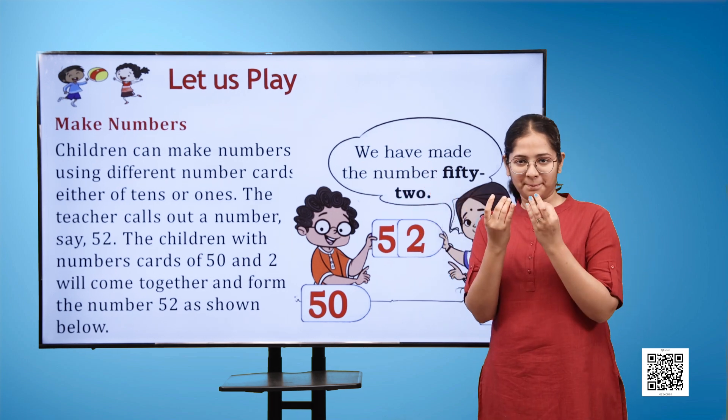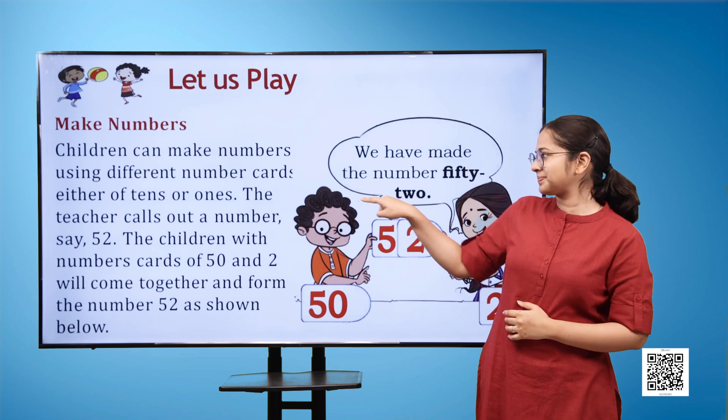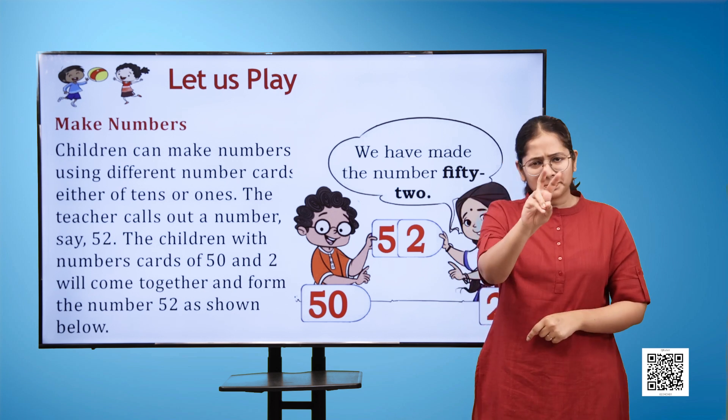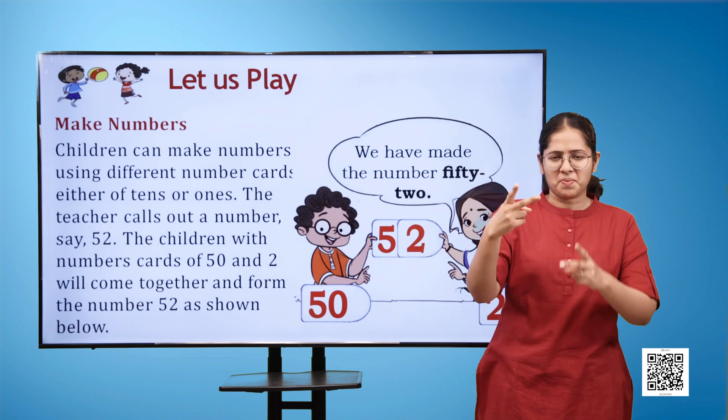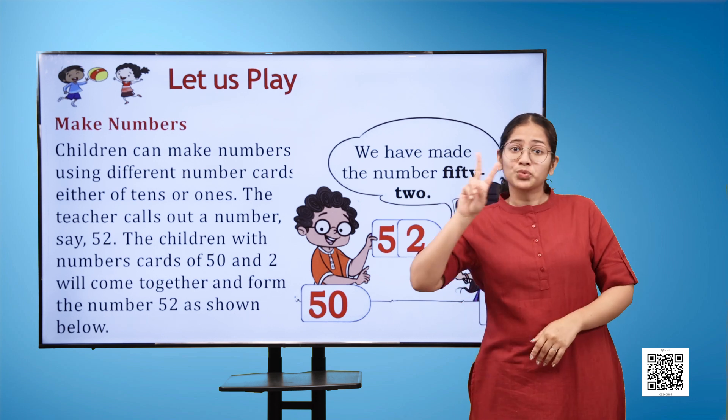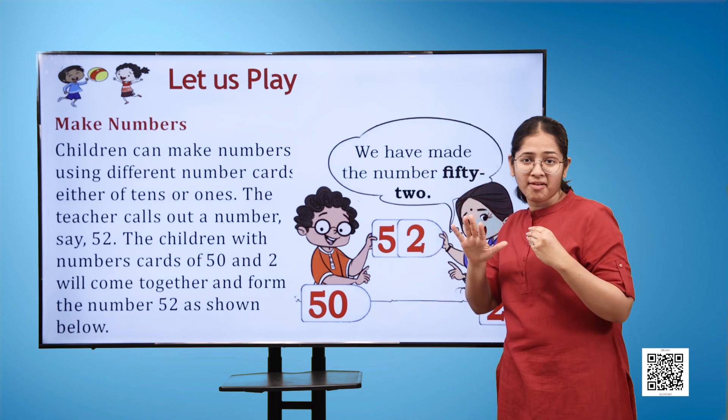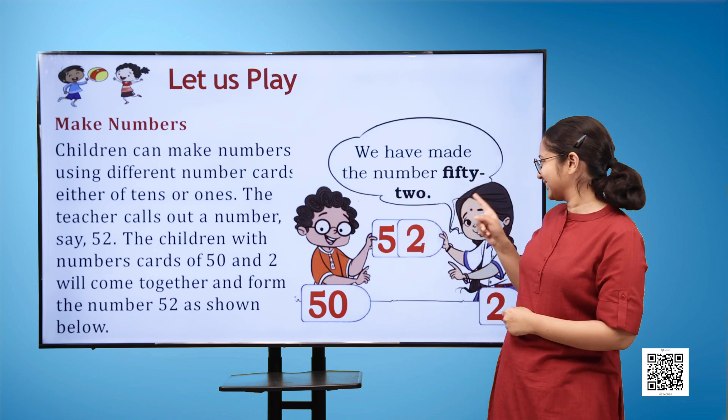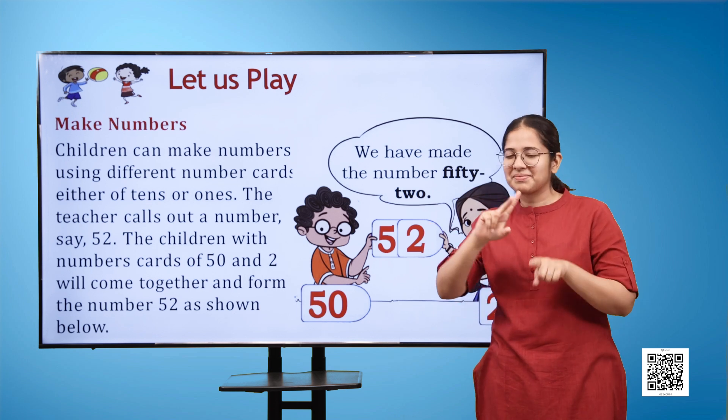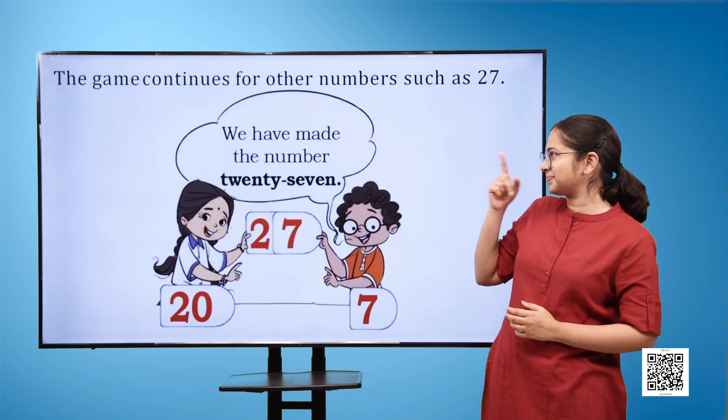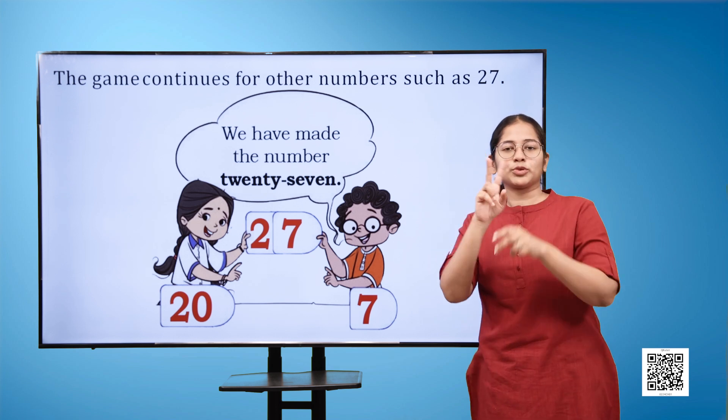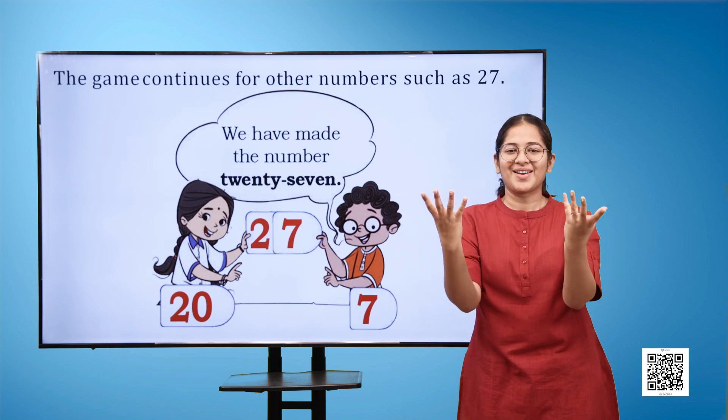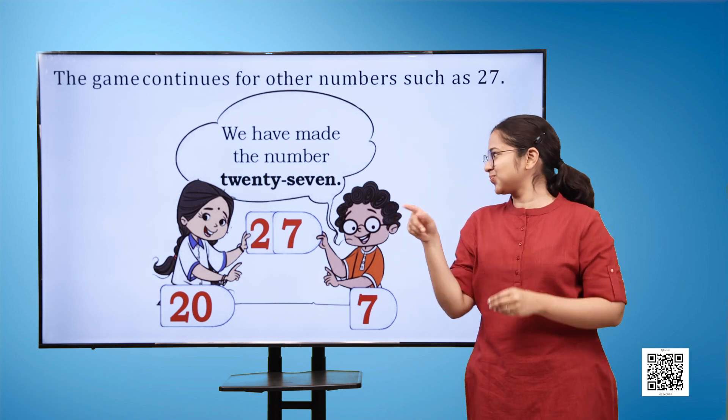Let us play. Make numbers: children can make numbers using different number cards, either of tens or ones. The teacher calls out a number, say 52. The children with number cards of 50 and 2 will come together and form the number 52 as shown in the image. The game continues for other numbers such as 27. The girl is holding card 20 and the boy holds the card 7, so the number becomes 27.